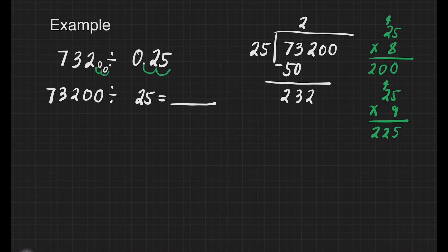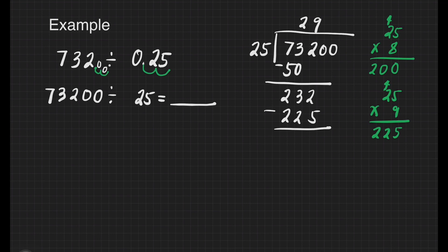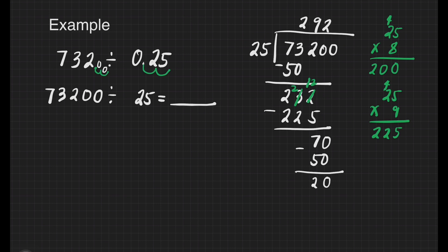Which do we choose — 200 or 225? We choose 9. 9 times 25 is 225. Subtract: 232 minus 225 — borrow from 3, making it 2, so 12 minus 5 is 7, 2 minus 2 is 0, 2 minus 2 is 0. Bring down 0. How many 25s in 70? That's 2. 2 times 25 is 50. Subtract: 70 minus 50 gives 20. Bring down 0. How many 25s in 200? That's 8. 8 times 25 is 200. 200 minus 200 is 0. So our answer is 2,928.